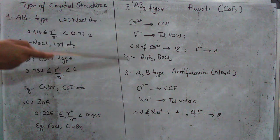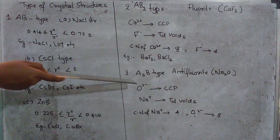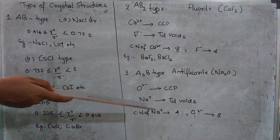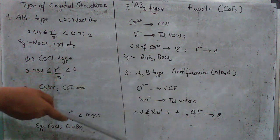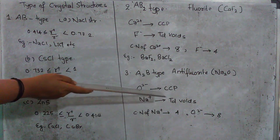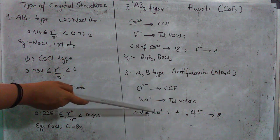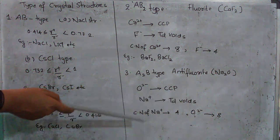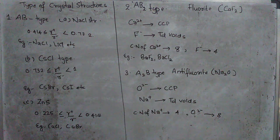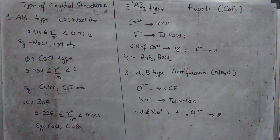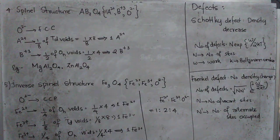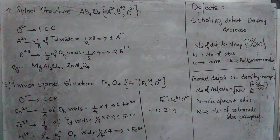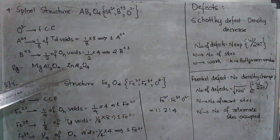Then the exact opposite of this is the A2B type that is antifluorite type. Example is Na2O where now the anion is occupying the cubic close-packed structure and the cation is occupying the voids. The coordination number is also reversed.